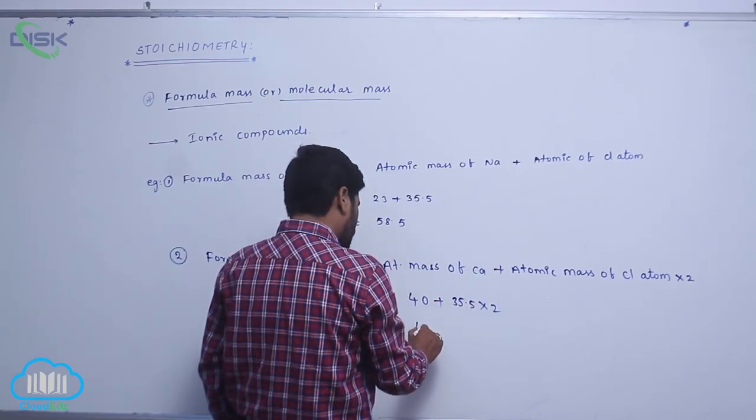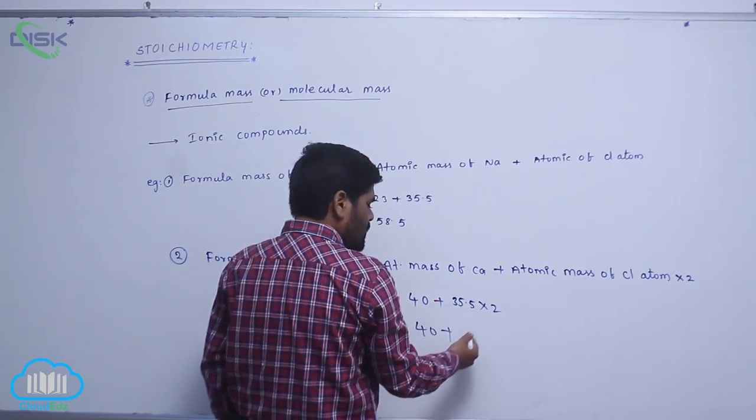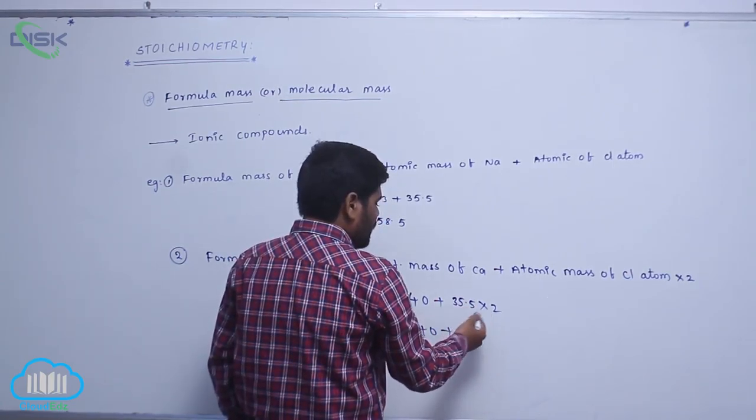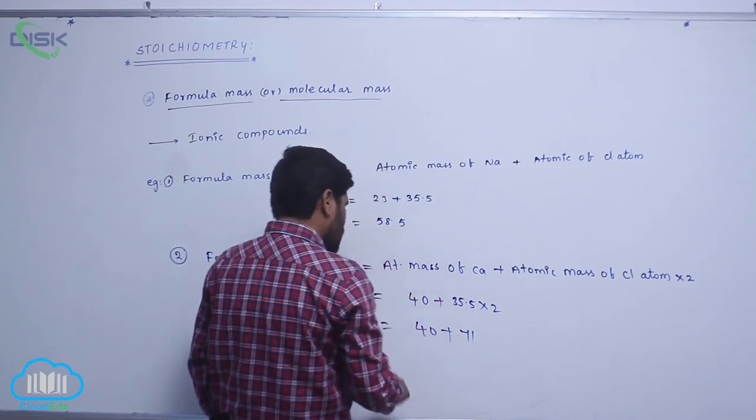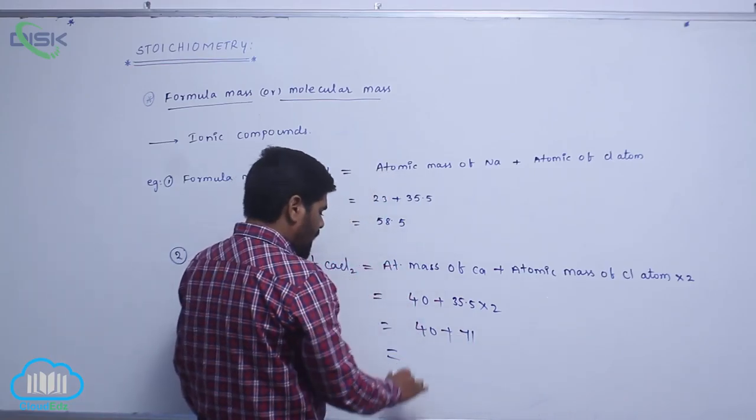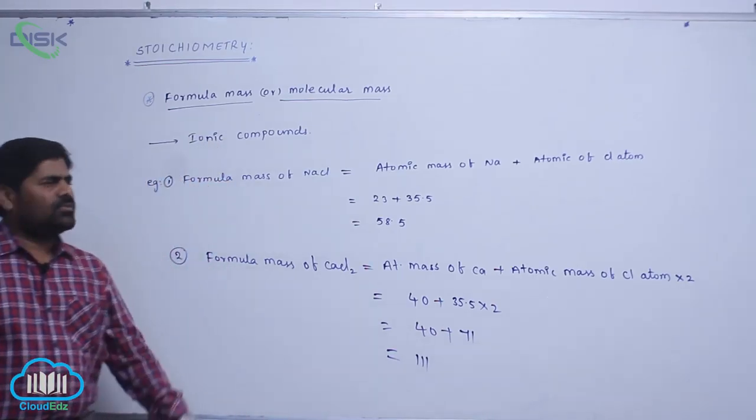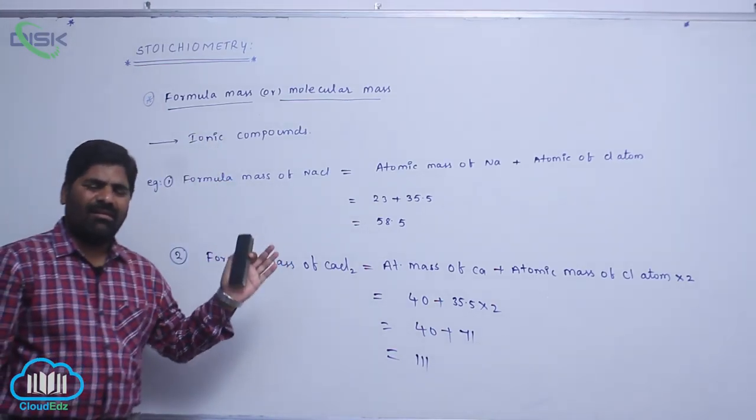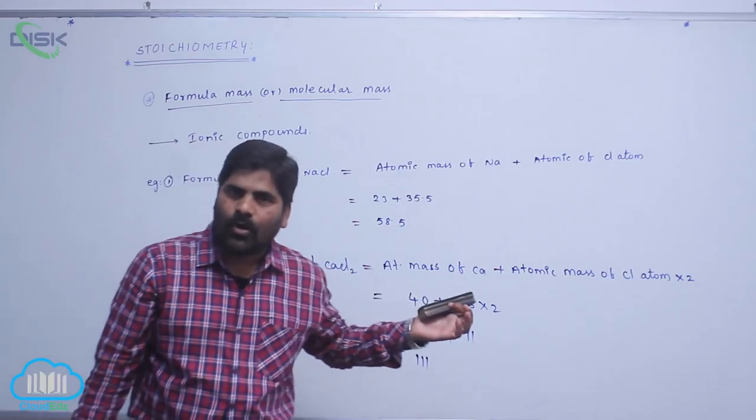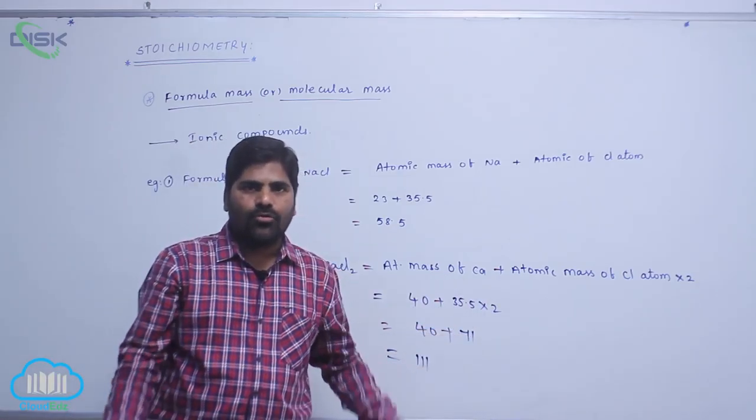Therefore, 40 plus 70, 35.5 times 2 equals 71, so therefore 111. So like this we should calculate formula mass for ionic compounds.